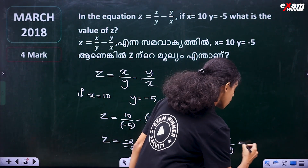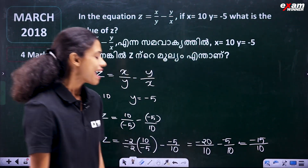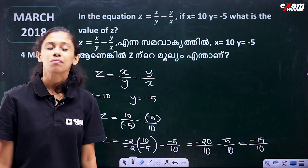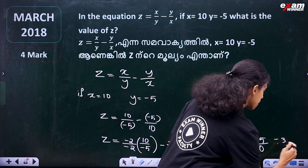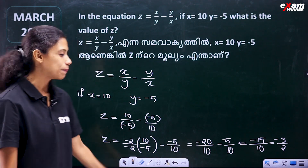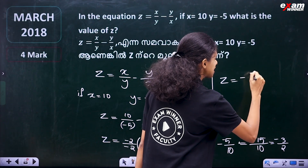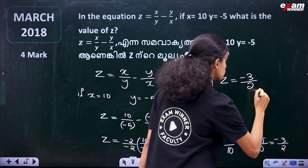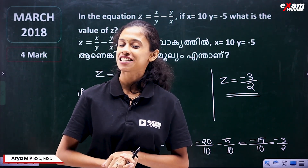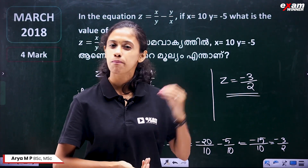The answer is minus 15 divided by 10. Simplifying, minus 3 divided by 2 equals minus 15 divided by 10. So z is equal to minus 3 divided by 2. It is simple and easy to solve a question from the previous year.